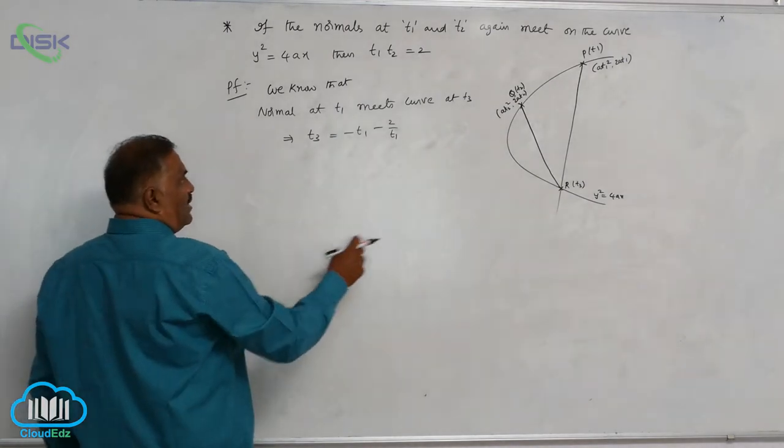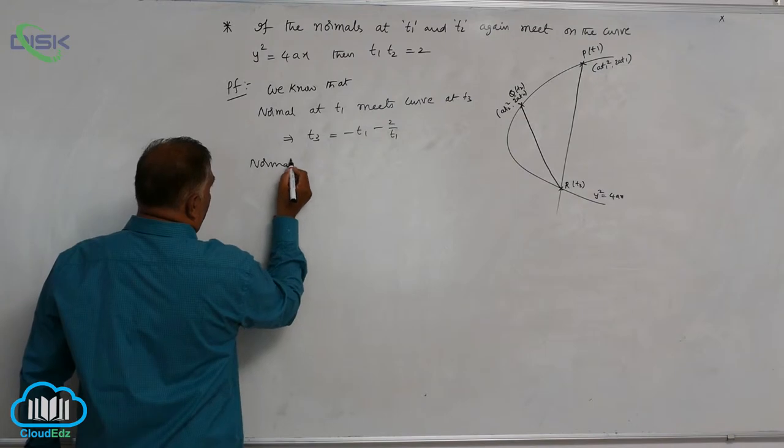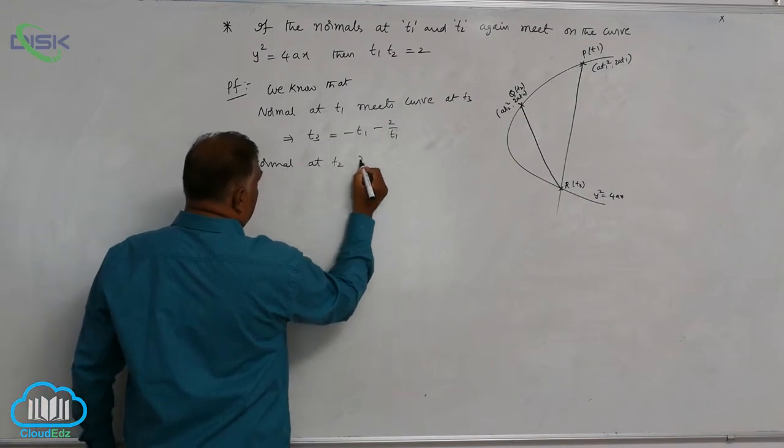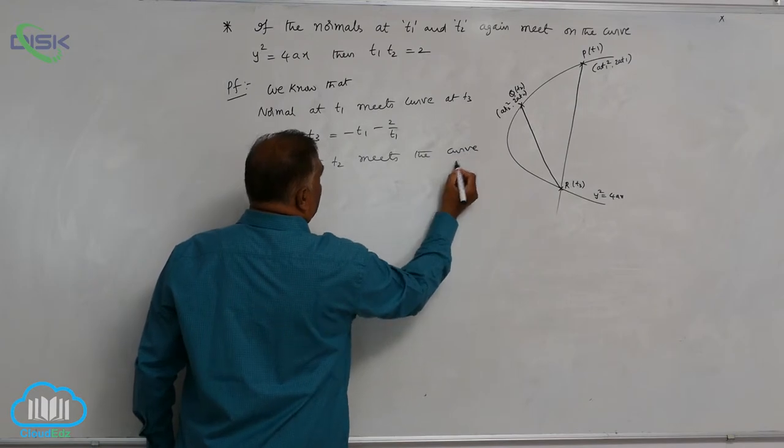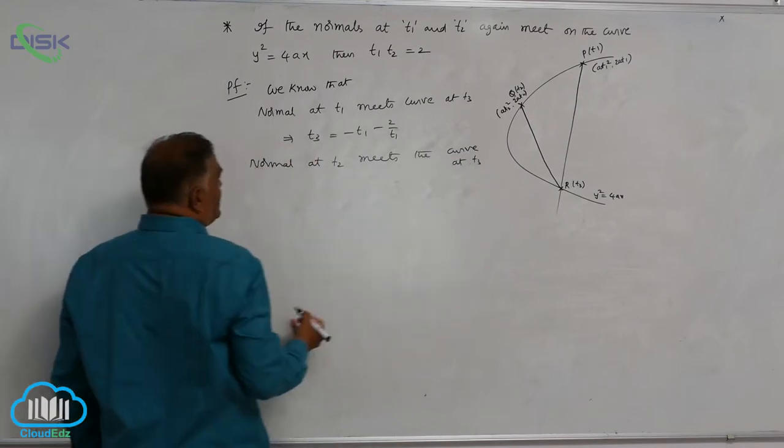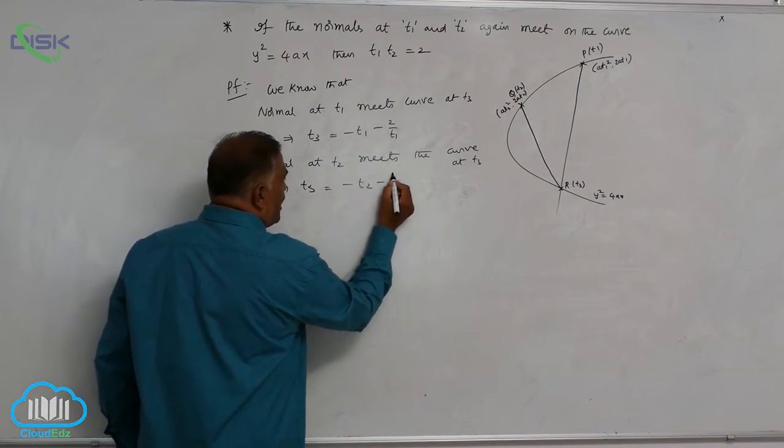Again, normal at t2. Normal at t2 meets the curve at t3. That means t3 = -t2 - 2/t2.